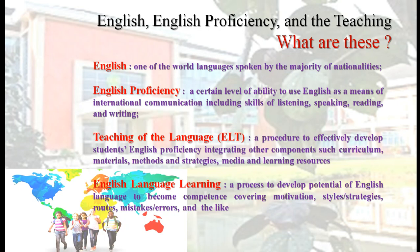When we are talking about learning, it is a process — a process to develop students' potential in the English language to become competent. Remember, we have potential. I also explained in another session that everybody has been given the potential of all languages, including English. So learning is a process we go through to develop that potential to become competent. The process includes motivation, learning strategies, roads of learning, and sometimes mistakes and errors happen, among other things.